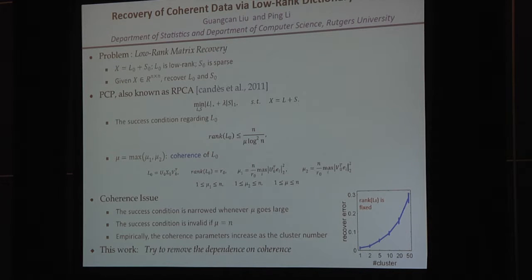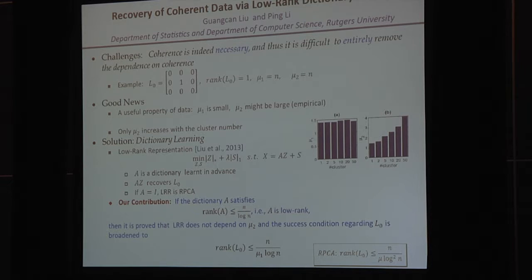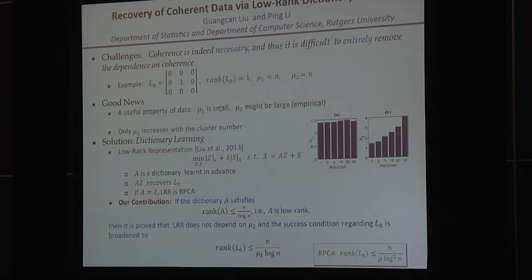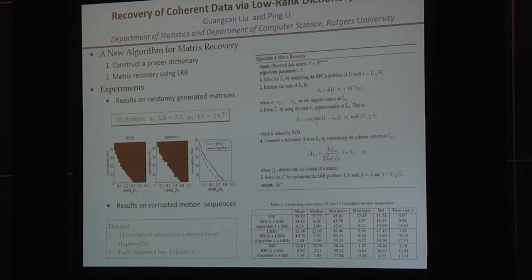In this work, we try to remove the dependence on coherence. However, it is actually impossible to entirely remove the dependence on coherence. Fortunately, our data has useful structure: we find that mu1 is always small and mu2 might be large. In this case, our approach is to learn the proper dictionary A for ARR. The dictionary A plays an important role — when A equals the identity, ARR reduces to RPCA. If A satisfies a low-rank condition, we prove that ARR does not depend on the second coherence parameter. Empirically, our method shows distinct improvement over RPCA. Thank you, and please come to our poster.